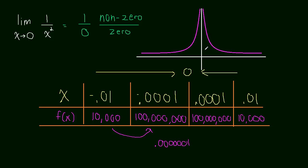And so what happens is this function, as we're approaching zero, the function is actually growing without bound. Meaning it's just getting bigger and bigger and bigger. The closer we get to zero.